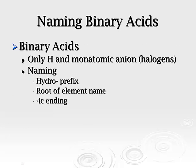Naming binary acids: bi means two. Binary acids are the hydrogen ion, H+, and a monatomic ion, which is one of the halogens. If you look at the periodic table, all of the halogens have a 1- charge because they have seven valence electrons. When we name it, we always put hydro out front as the prefix, use the root of the element name, and put -ic at the end.